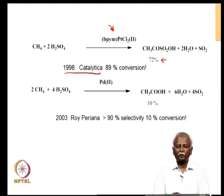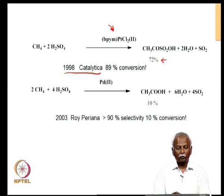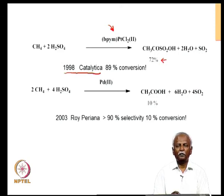Methanesulfonic acid could be generated with as high as 72 percent conversion efficiency, and the oxidant was in fact sulfuric acid. This turns out to be catalytic in platinum, so it is an extremely important discovery. Platinum is still expensive, but you could recover it at the end of the reaction, and so this turns out to be a valuable contribution.